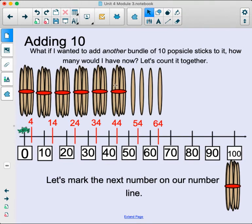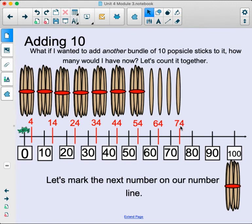We added one more bundle. We would have 64. Notice the pattern on our number line. So what would be the next answer? Adding one more bundle of 10. 74. Good job. And then one more bundle of 10. 84. Good job.